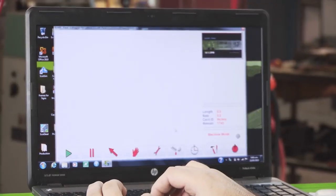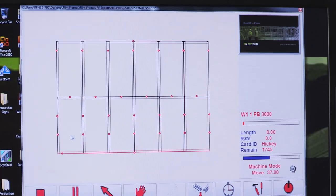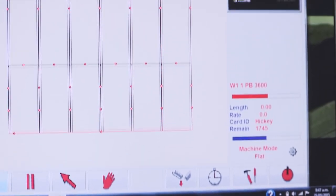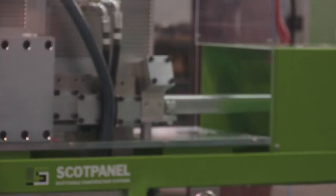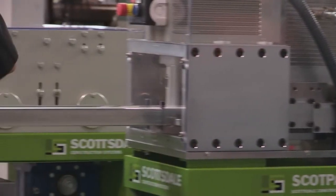The ScottsRF roll former software is easy to use with many powerful tools to improve productivity and bottom-line profit. Constant visual representation of the extrusion process keeps the operator fully informed at all times.